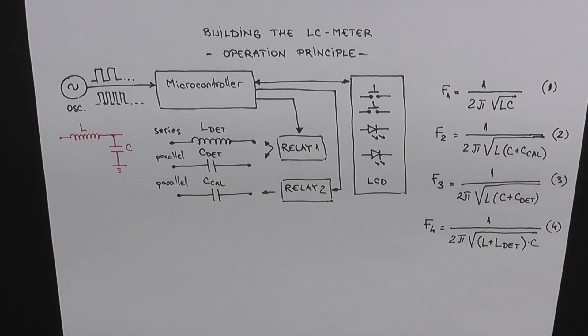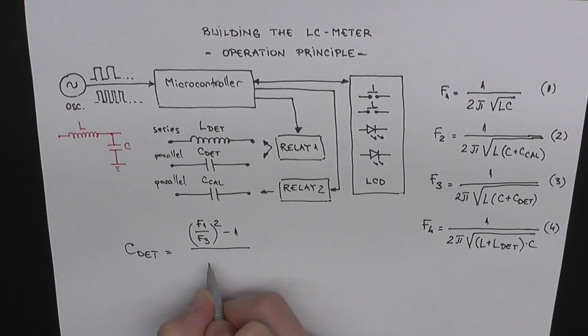The last two equations that I'm going to give you are the ones that we are actually going to use to calculate the inductance and the capacitance that we want to measure. First, for the capacitance, C to determine equals F1 over F3 squared minus 1 over F1 over F2 squared minus 1 multiplied with Ccal. Equation number 5.